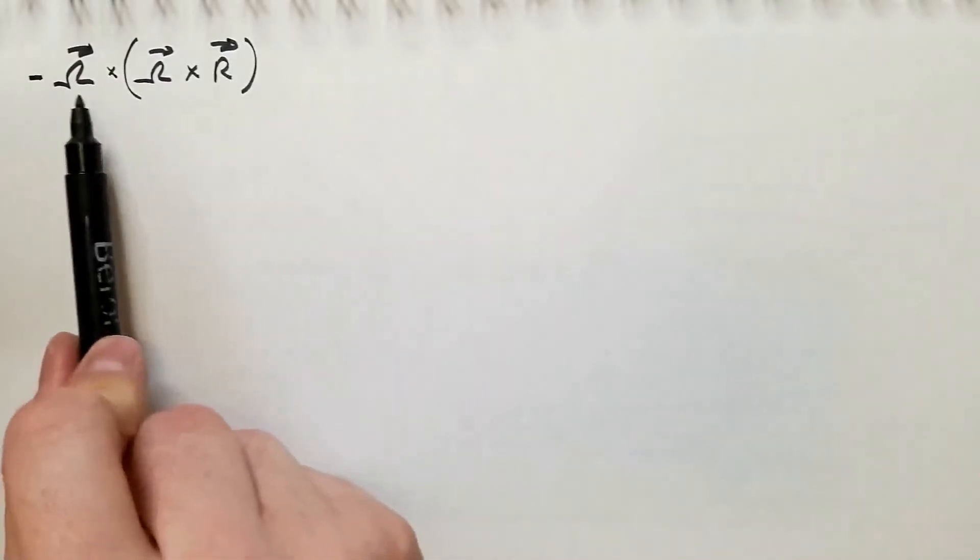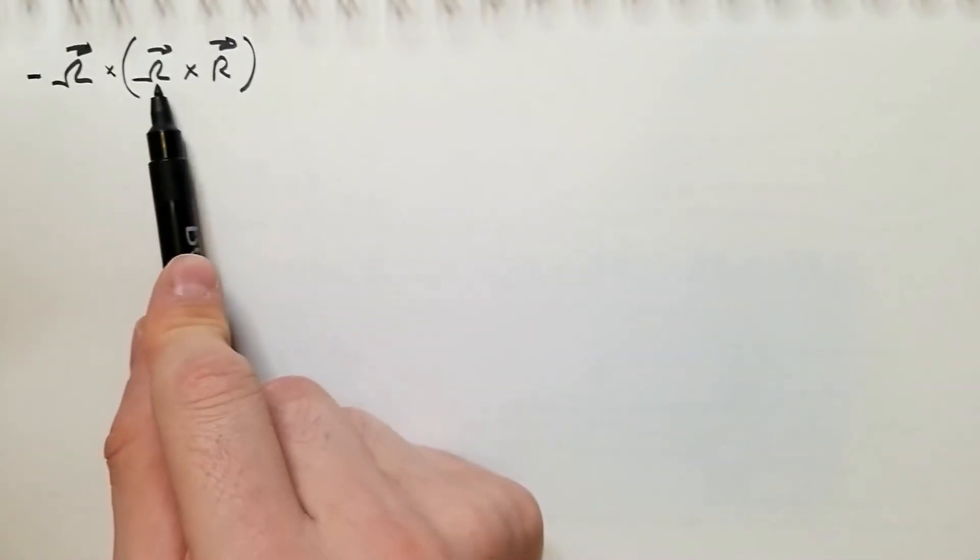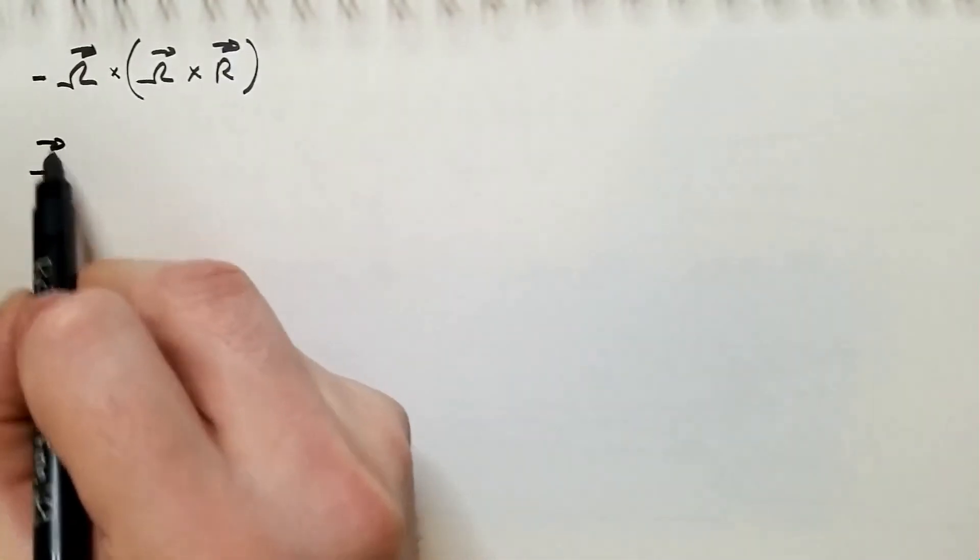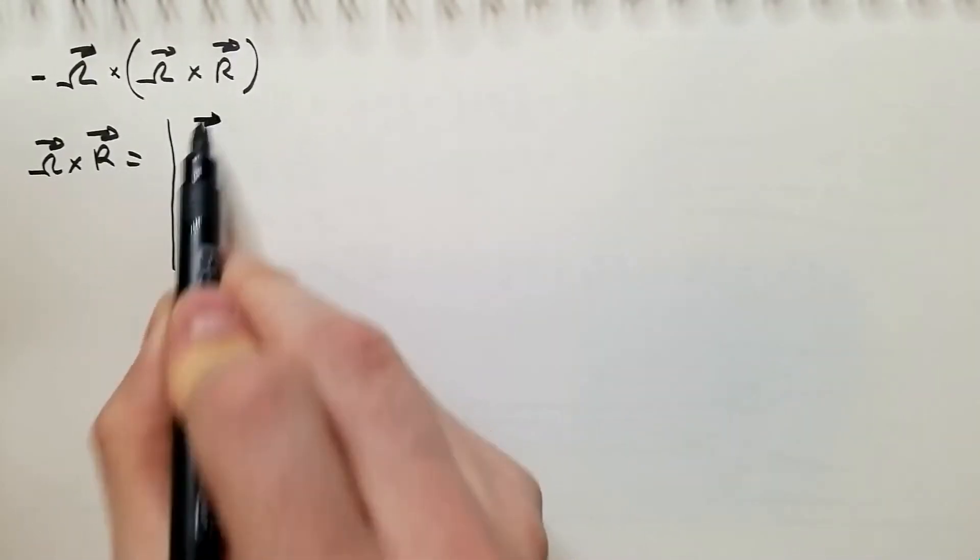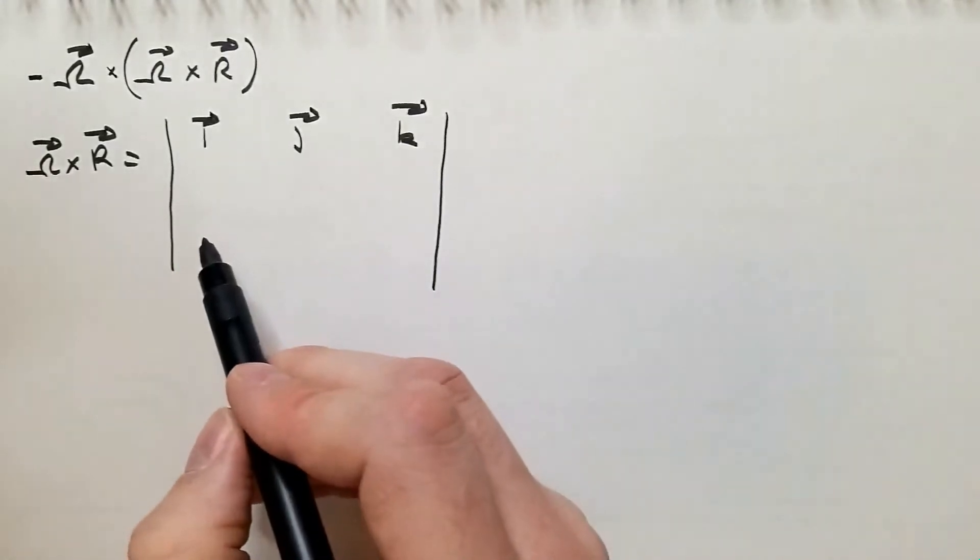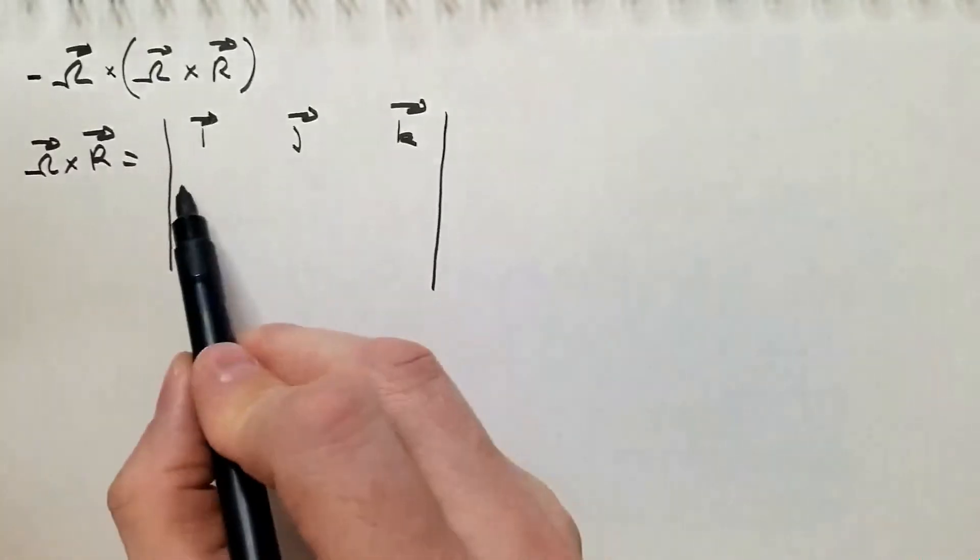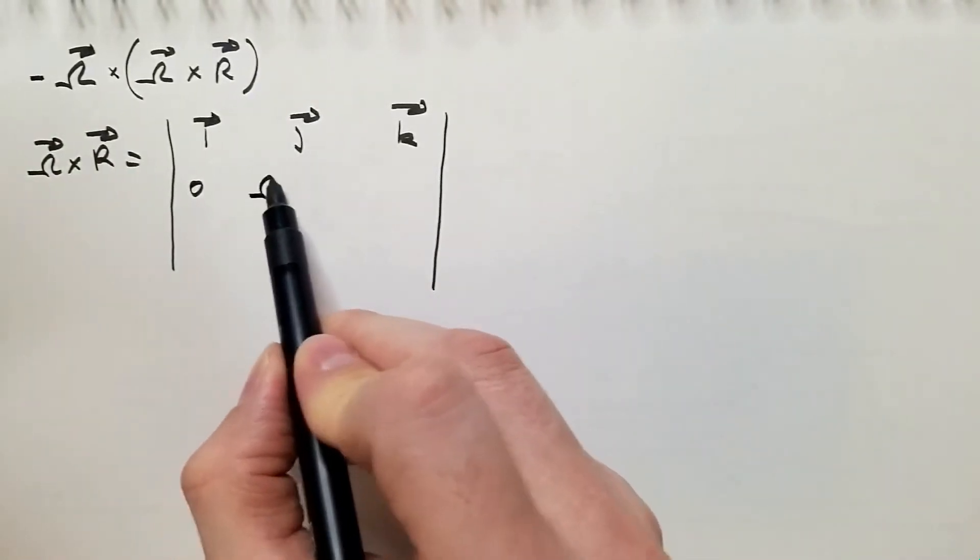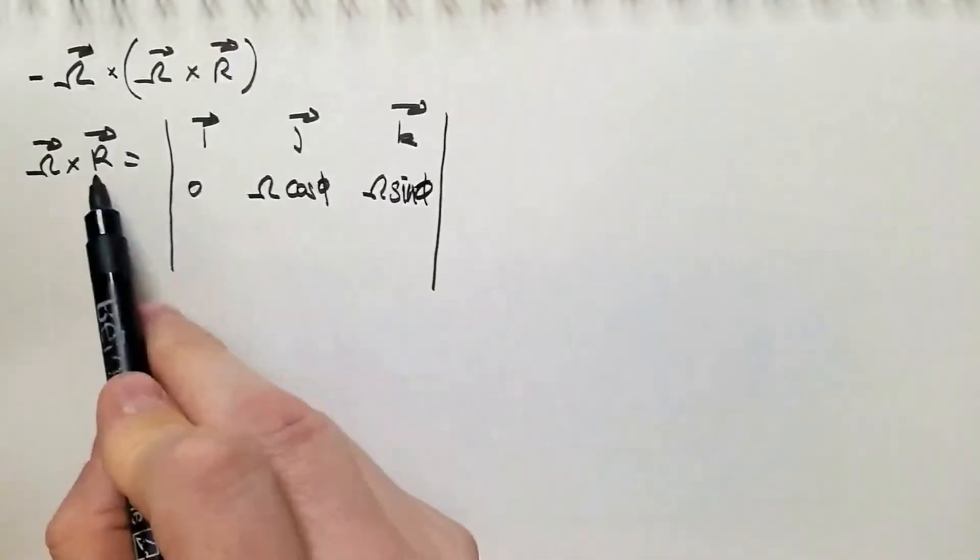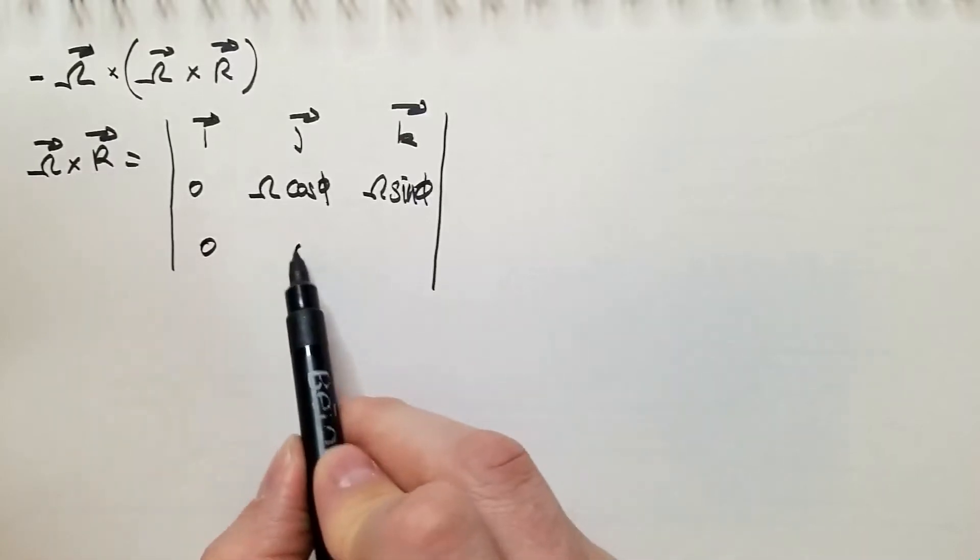So, as I said, we need to calculate this triple cross product. There are several ways to do it. For me, the easiest is first to calculate cross product between omega and R, and then to calculate cross product between omega and whatever we get for omega cross R. So, first, omega cross R is equal. The way we calculate cross product, first row is unit vectors, I, J, K. The second row is the component of omega, which we just calculated to determine to be zero, omega cosine phi, and omega sine phi. And the last row is the components of R, which is zero, zero, R.